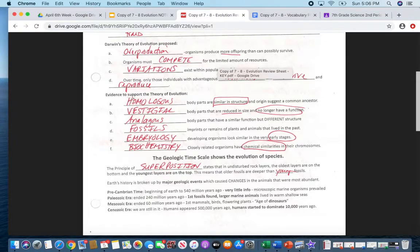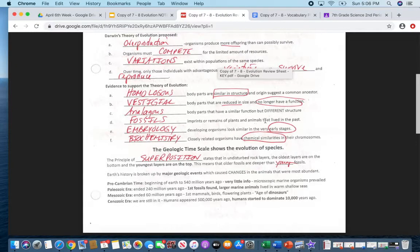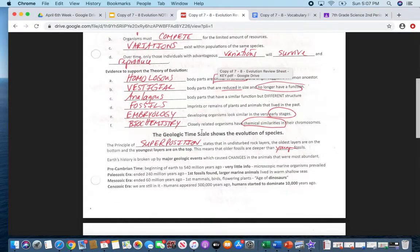Okay, again, homologous structures, our body parts are similar or the same structure. Vestigial structures have no longer any more function. We don't need them, yet they're still around. Fossils are imprints or remains of plants or animals that have lived in the past. Embryology or embryos is when we look at the development of embryos and how the very, very early stages there's many things that are similar between the embryos which allow us to say that we've evolved where we've all come from some type of similar species. Ancestor many, many million years ago.